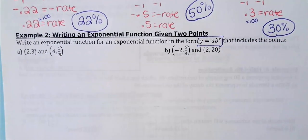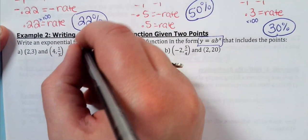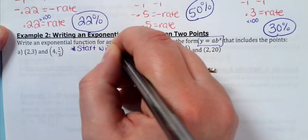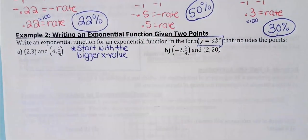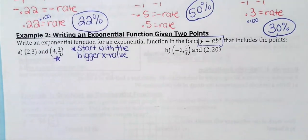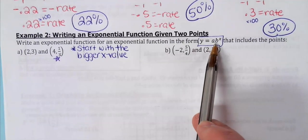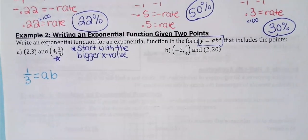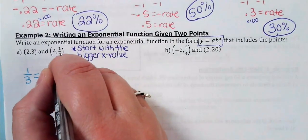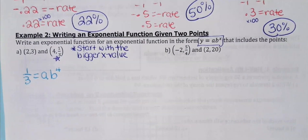I'm going to start with the point that has the bigger x value — that'll make the algebra much easier. If one x value is two and the other is four, start with the point with x equals four, which is (4, 1/3). You're going to plug those points in for x and y into that general form. A and b will be variables — that's what we're solving for.